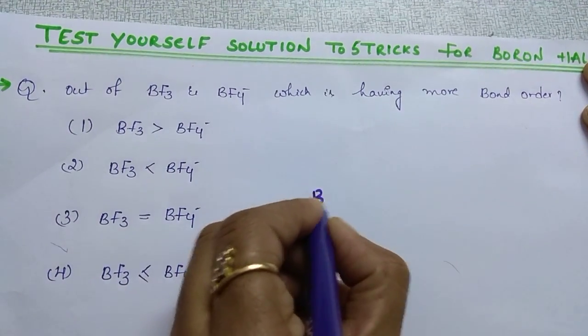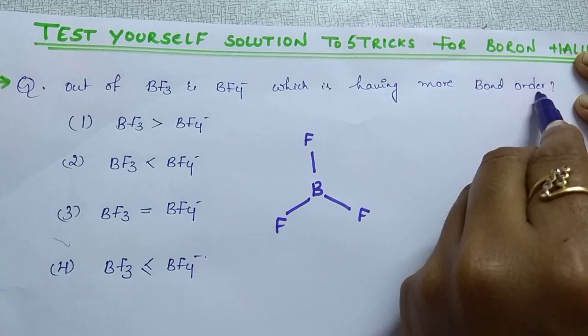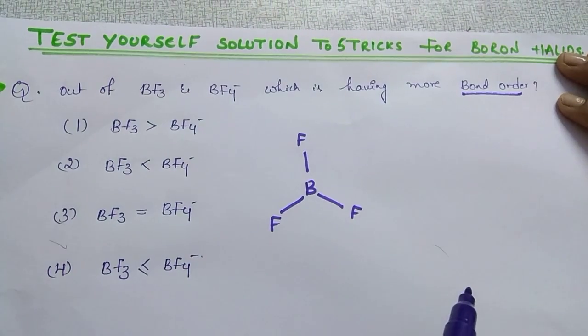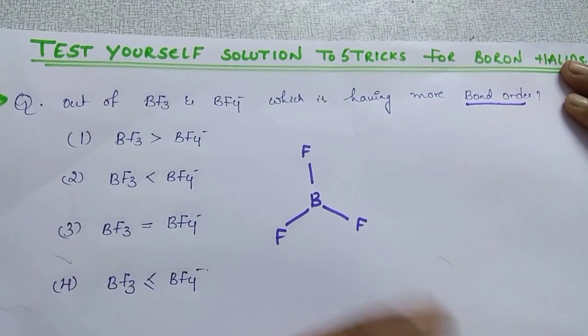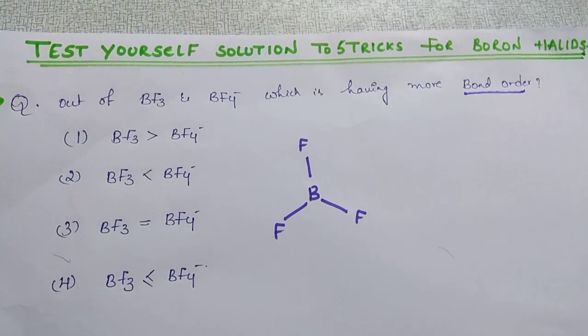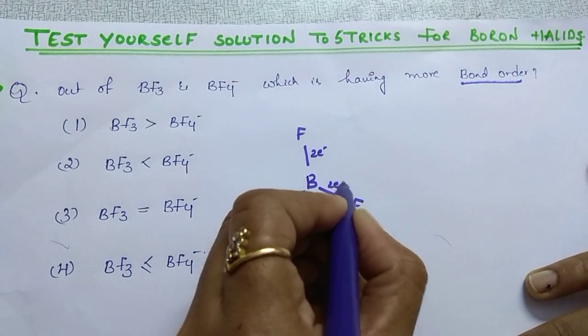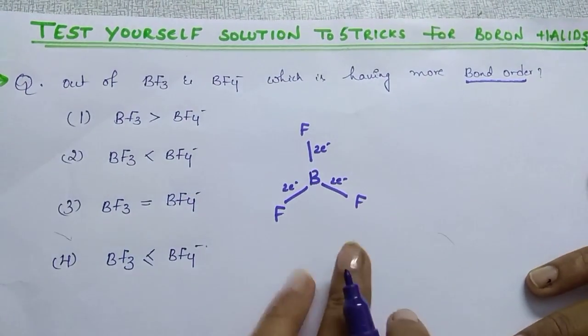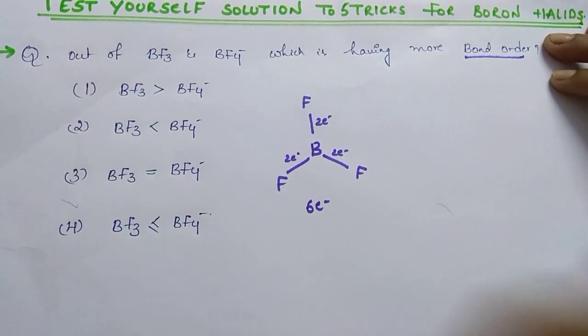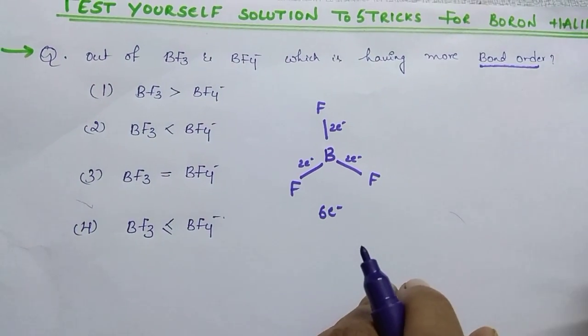Suppose BF3, if you draw the structure like this, bond order is nothing but the number of bonds which is present between two atoms. Suppose here only one bond is there, so that bond order of BF3 is equal to 1. If you consider then the answer will be wrong because around Boron if you check it out, how many electrons are there? Here 2 electrons after bonding, 2 electrons, 2 electrons. Total of how many? 6 electrons is there. But according to Octet it should have 8 electrons and only this BF3 molecule is stable. But here it has only 6 electrons.